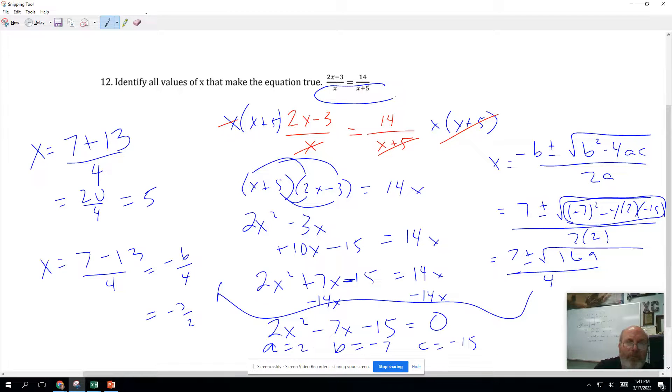If I plug in 5, I'm good. And if I plug in negative 3 halves, I'm good in the denominators. Neither one is 0. So, X equals negative 3 halves and X equals 5. Those are my solutions.